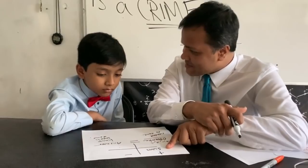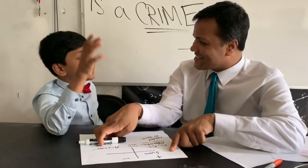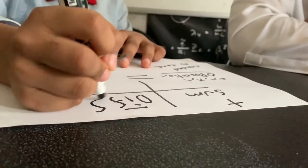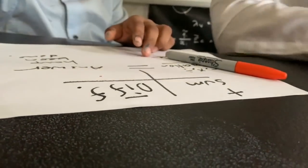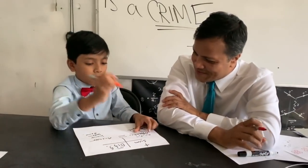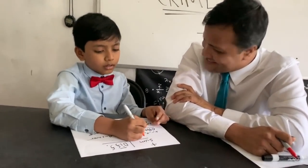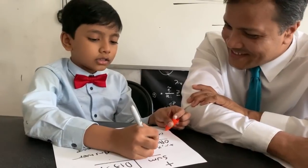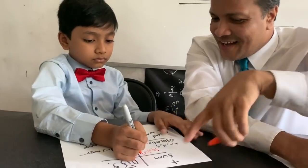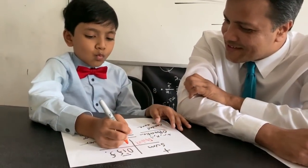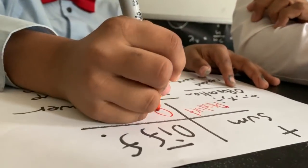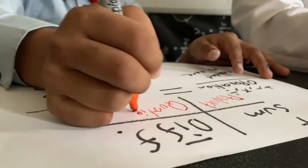For subtraction, the result is the difference between two numbers. For multiplication, the result would be the product. And the result of division would be the quotient. All right — now we are moving to the fun part!